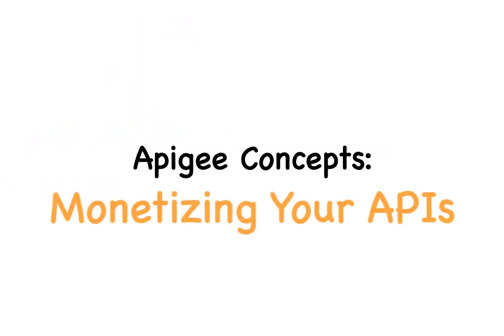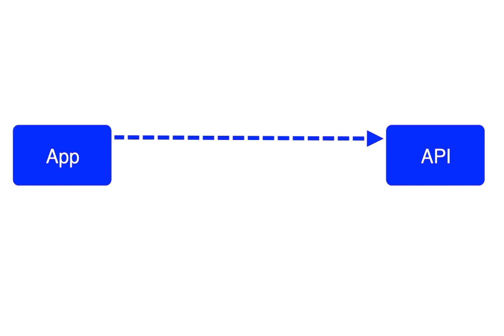Let's take a high-level look at Apigee's monetization feature and what we need to do to monetize an API. We'll start off by creating a few artifacts that enable you to share your APIs with your developer community. Whether you are monetizing your API or sharing it free of charge, you'd create the same set of initial artifacts.